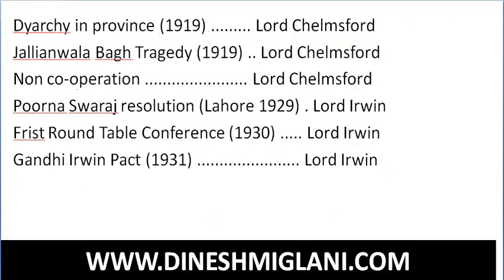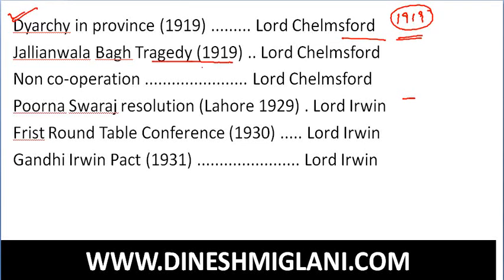The Diarchy system in provinces was introduced through the 1919 reforms, known as Montagu-Chelmsford reforms, under the Government of India Act 1919. The Jallianwala Bagh tragedy also occurred in 1919. The Non-Cooperation Movement was called by Gandhiji in 1920 — all these events were at the time of Lord Chelmsford. Due to the Chauri Chaura incident, the Non-Cooperation Movement was later called back.